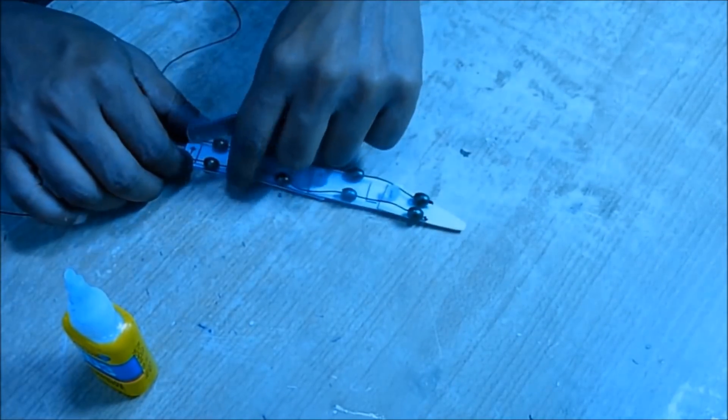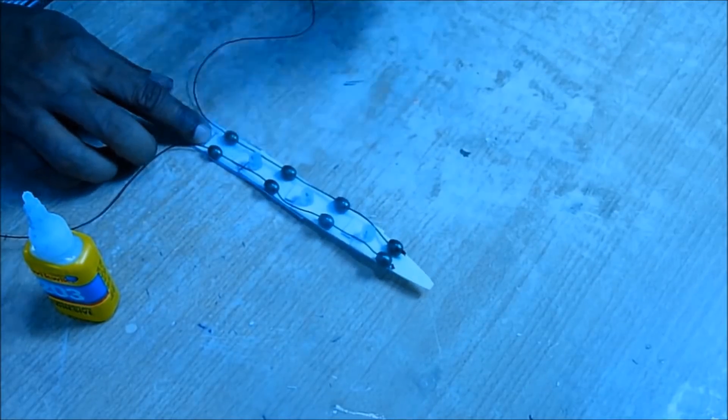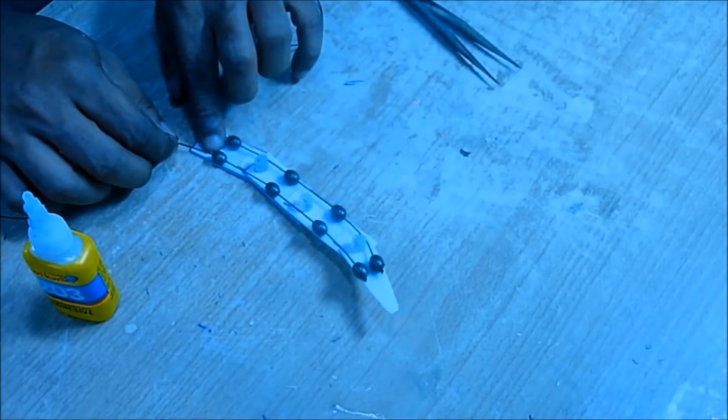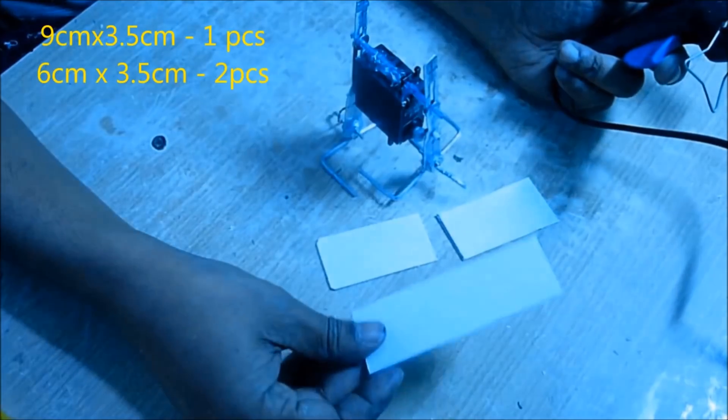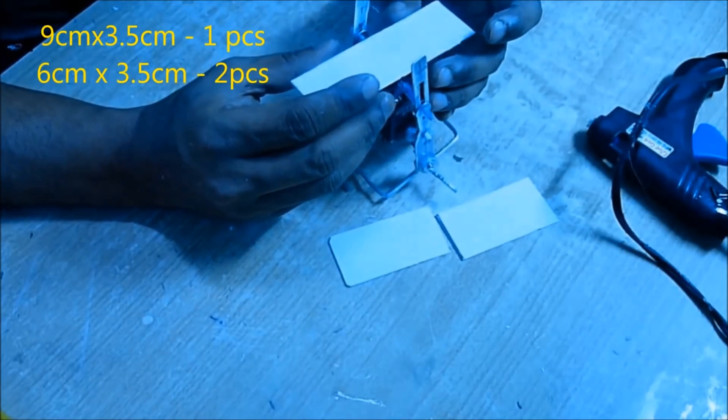If you pull the left side string, the tail will bend left side. If you pull the right side it will bend to the right side. We'll glue these three pieces of plastics to make a triangular frame of the body like this.